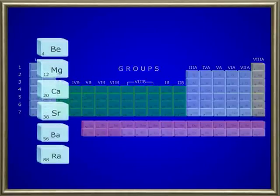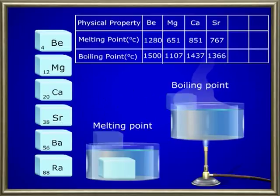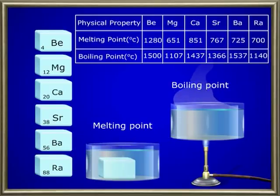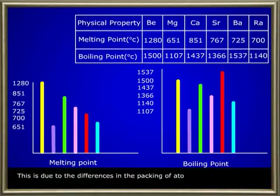Let us now look into another set of properties of these alkaline earth metals: their boiling points and melting points. These alkaline earth metals have higher boiling and melting points. The metallic bonds between atoms in the alkaline earth metals are stronger than other metals. However, you will not find any increasing or decreasing trend for the values of melting and boiling points. This irregularity is due to differences in the packaging of atoms in the crystals and the interatomic forces.